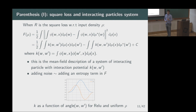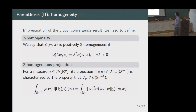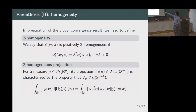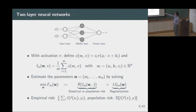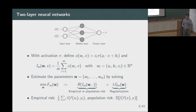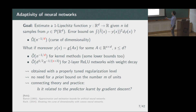Before stating the global convergence results, I discuss the homogeneity properties. I focus on what are called two-homogeneous activation functions. We say that phi of w and x is positively two-homogeneous if when I multiply the parameters by lambda, I get lambda squared as a factor of my function. For a two-layer ReLU neural network, this is exactly what happens: multiplying the parameters by lambda gives lambda squared in the output. This is essentially why I call these two-layer neural networks — the two corresponds to the homogeneity degree of the function they generate. For deeper neural networks, this would be of even higher degree of homogeneity.